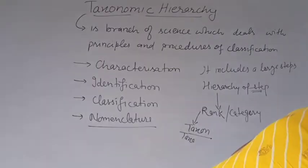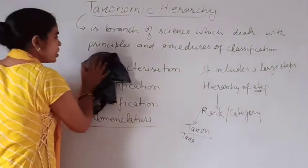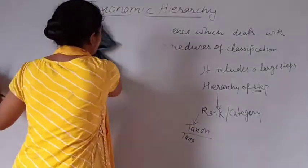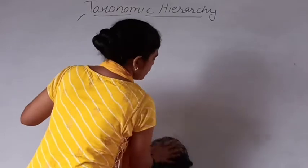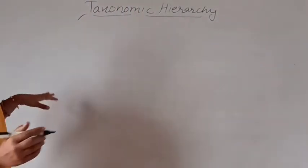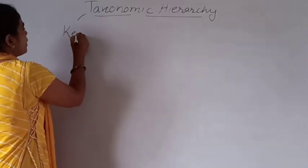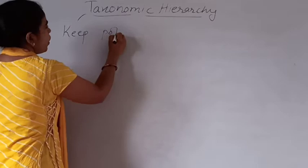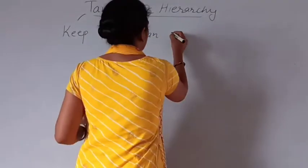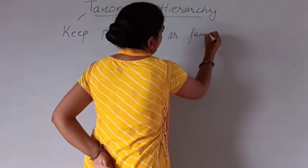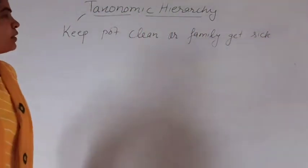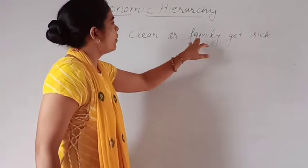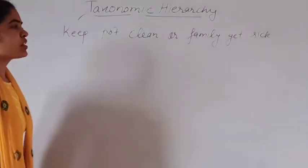Now, how can we learn this taxonomic hierarchy? The easiest way is a mnemonic: 'Keep court clean or family get sick.' Very easy — keep, court, clean, or, family, get, sick. This helps you remember the different taxonomic categories.